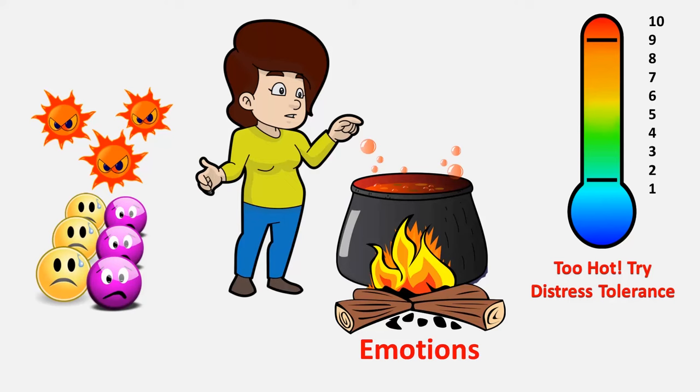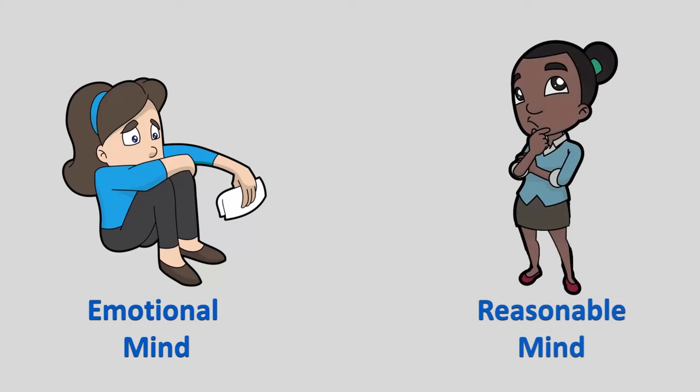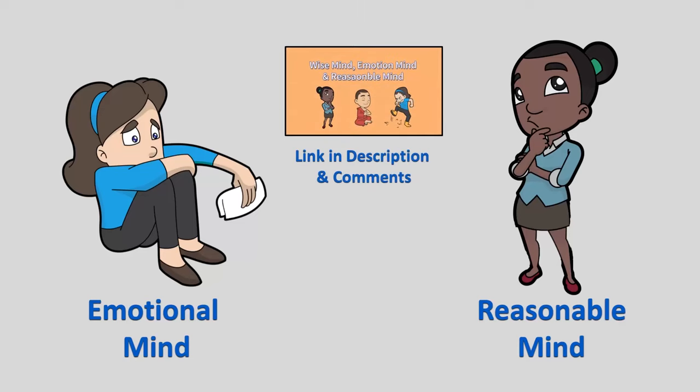Now, one of the challenges with responding to our emotions when they're in the 7 to 10 range is that when our emotions are this intense, we're operating out of emotional mind. Things like rating the intensity of an emotion and deciding whether to use distress tolerance or emotion regulation requires reasonable mind. So this is hard to do when we're operating out of emotional mind. If you're not sure what emotional mind and reasonable mind refer to, you can check out the video that I linked to in the description and pinned comment.